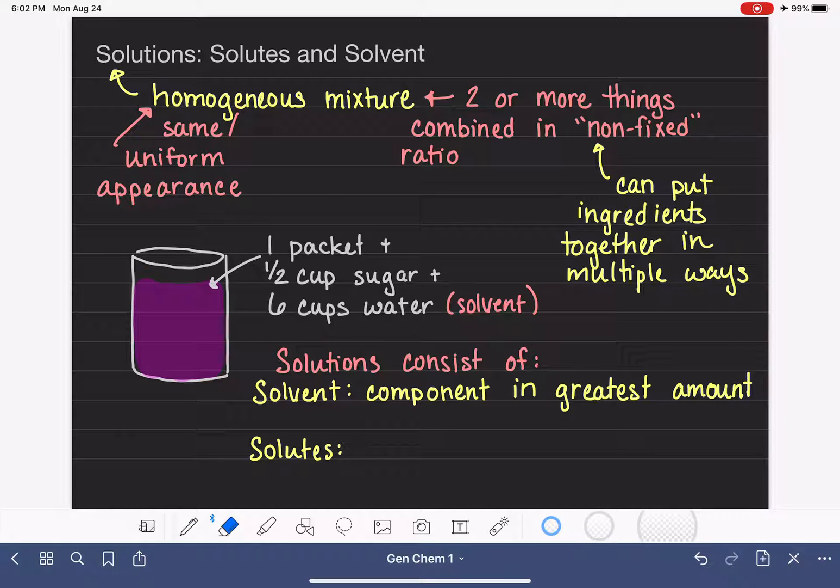And then all the other components of our solution are just called solutes. So it doesn't matter how many we have or how much we have, all the other components are considered solutes. So the Kool-Aid packet would be a solute, and the sugar would be a solute as well.